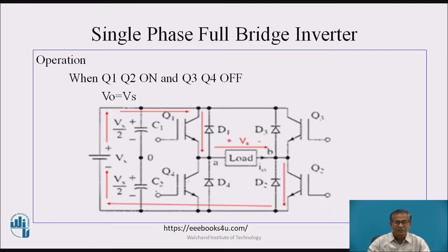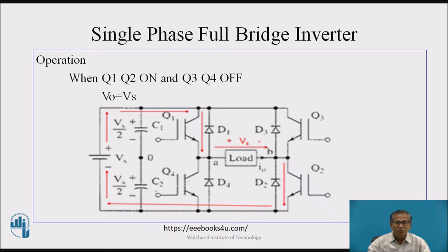Let us see how it works. Assume that the load is purely resistive. Initially, apply the gate pulse to Q1 and Q2 and block the gate pulse for Q3 and Q4. Q1 and Q2 conduct and act as short. Therefore, the direction of current is: Vs → Q1 → load → Q2 → back to Vs. Therefore, Vs appears across the load. Assume that the direction of load voltage is positive and the direction of load current is positive.